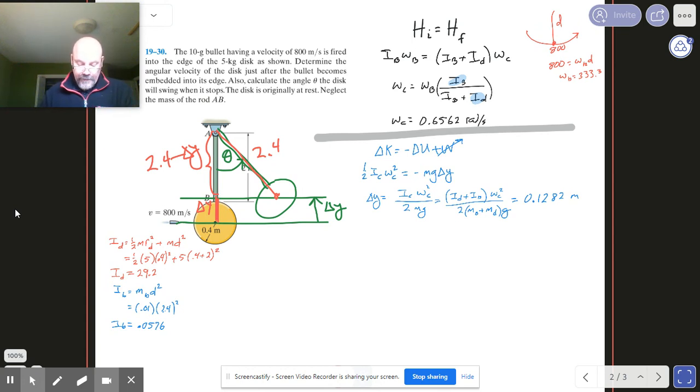Then we could say that the cosine of the angle of interest is going to be the adjacent side, which is 2.4 minus our motion, and then divided by the hypotenuse, which is still 2.4. And when you work through all that, what you're going to get is that theta is equal to 18.81 degrees.